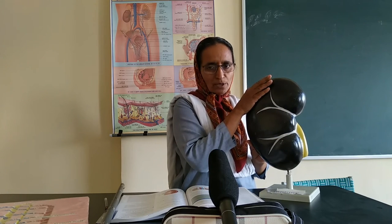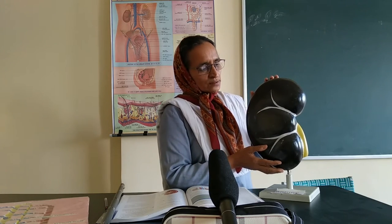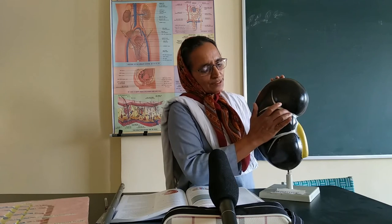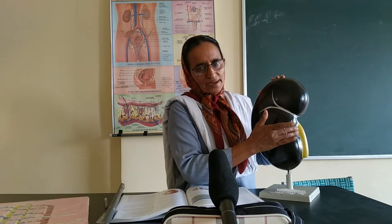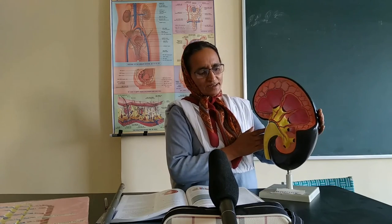This is the outer portion. It is a chocolate color or brown color because it is supplied by blood. This is the central portion of the kidney. The outer portion and the inner portion of the kidney. The kidney is divided mainly into the capsule, the cortex, and the medulla.